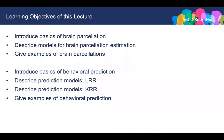In this lecture, I will first introduce the basics of brain parcellation, then I will describe models for estimating brain parcellation. I will give examples at the end using supervised ML to estimate individual-specific parcellations. In the second part, I will talk about behavior prediction, describing two supervised prediction models: the linear ridge regression and the kernel ridge regression.